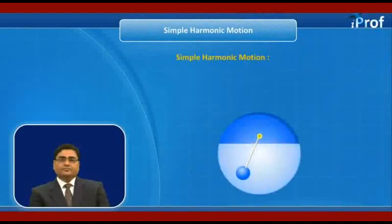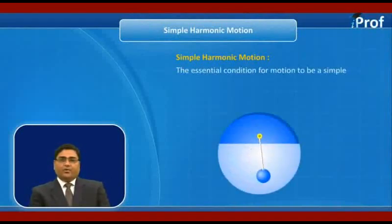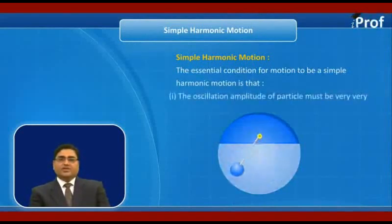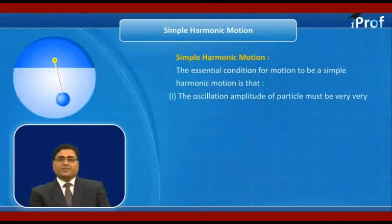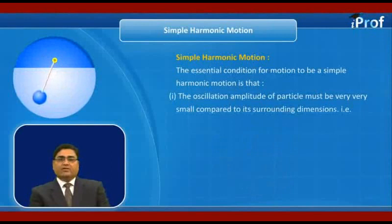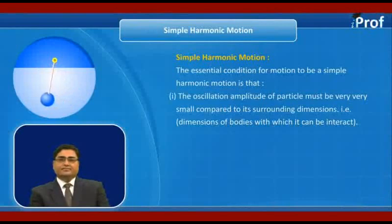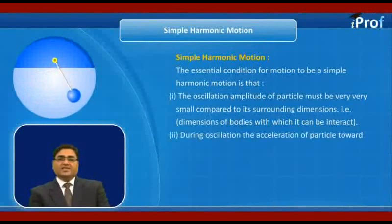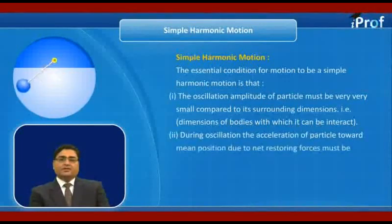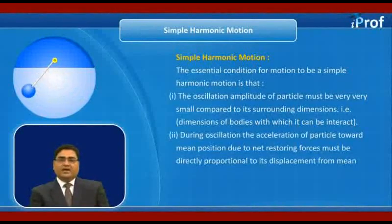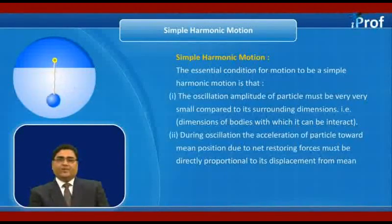The essential conditions for simple harmonic motion are: first, the amplitude of oscillation of the particle must be very small compared to its surrounding dimensions — that is, the dimensions of bodies with which it interacts. Second, during oscillation, the acceleration of the particle must be directed toward the mean position and must always remain proportional to the displacement from the mean position.